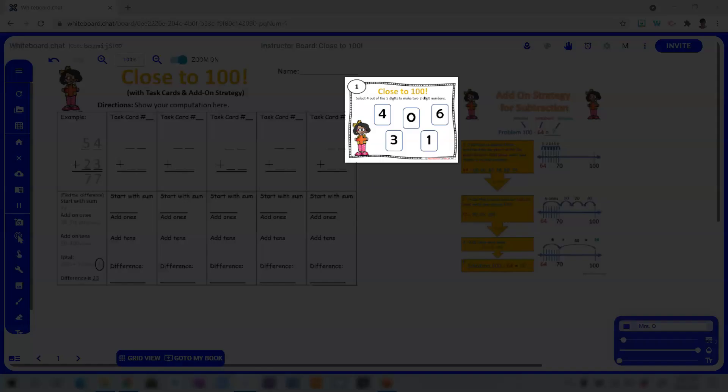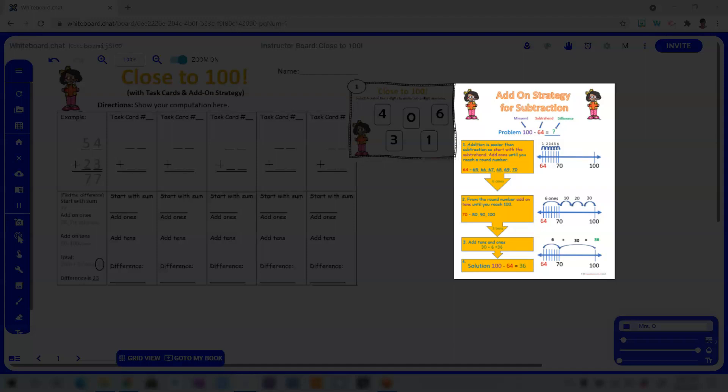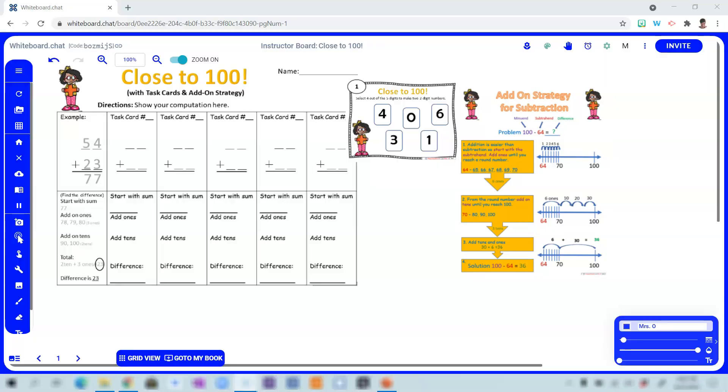Here to the left is the recording sheet, the task card, along with an anchor chart. When assigning this as an activity for students to work on independently, the challenge would be for students to get as close to 100 as possible. A regular deck of playing cards can be used for this game. However, in the beginning, I prefer assigning task cards similar to this one, where they're to select four out of the five digits to make two sets of two-digit numbers. Keeping in mind that when those numbers are combined, the goal is to have them as close to 100 as possible.